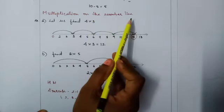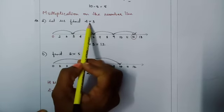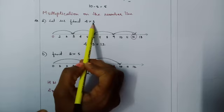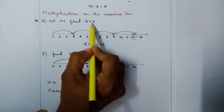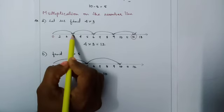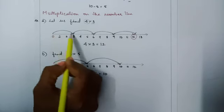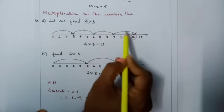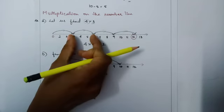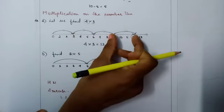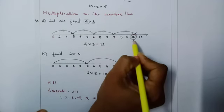Multiplication on the number line. Let us learn to multiply two numbers on the number line. To find the product of 4 and 3, I fix my step size at 3 steps and jump 4 times. Jumping 4 times with a step size of 3: 1 time, 2 times, 3 times, 4 times. So 4 into 3 is 12. My answer is 12.